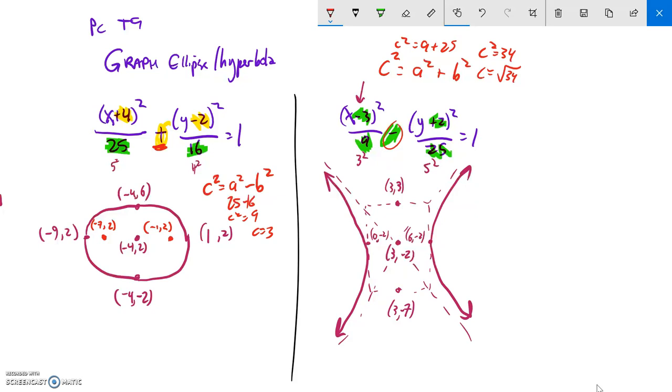Great. So c squared is 34, so that means that c is the square root of 34, which, let's see, I think 4 goes into that. No, it doesn't. We'll just leave it as square root of 34.